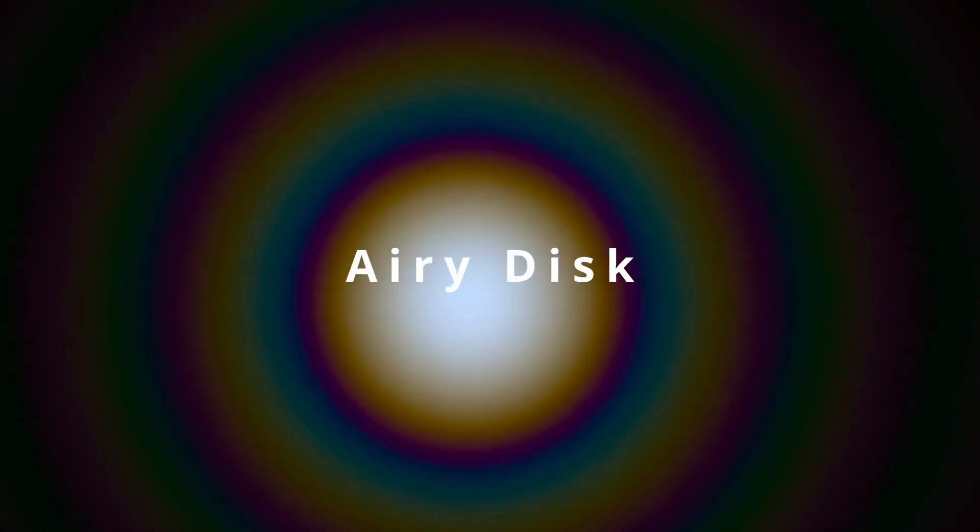Instead of a single dot, you get a blurred out circle and concentric rings around it. This is called the Airy disk, named after the mathematician who developed theories around it. Sir George Biddle Airy.